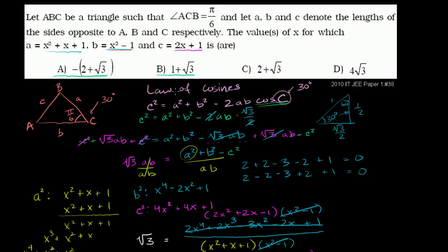But be very careful — remember the context of the problem. These sides had to be positive. If you put the first value in here, all the sides will not be positive. In particular, if x was negative (2 plus square root of 3), that value is around negative 3 point something, and putting it in for side c gives a negative distance — and c cannot be negative, it's the length of a side of a triangle. So that answer is not valid. The correct answer is only b.